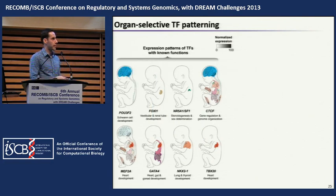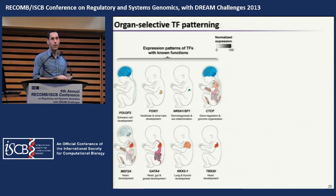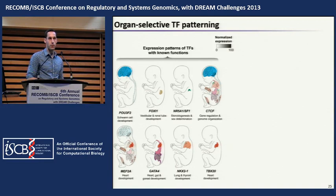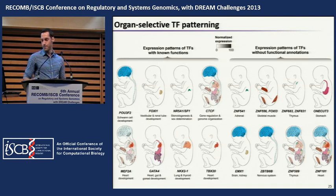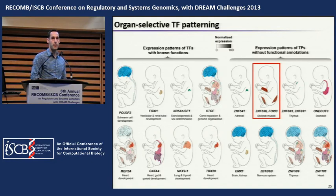Some specific examples: POU3F2, involved in Schwann cell development, is expressed in neural tissues. TBX20 is expressed only in heart. These are the known and expected patterns of developmental regulators. But there are also transcription factors with little or no functional annotation that have highly restricted or broad expression patterns. For example, ZNF556 is expressed exclusively in skeletal muscle, and half of the enhancers predicted for it are bound by MyoD — the master regulator of myogenesis — suggesting this transcription factor is involved in muscle development.